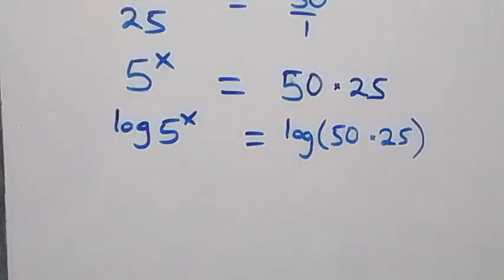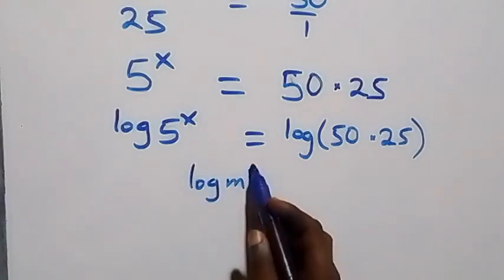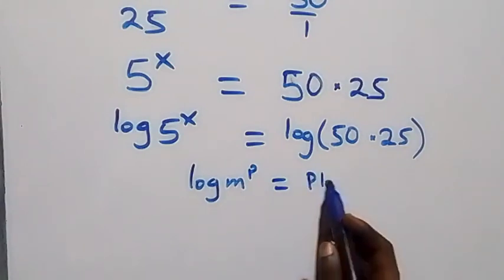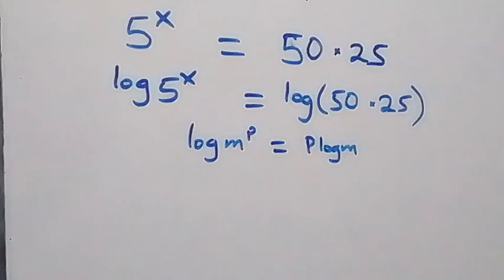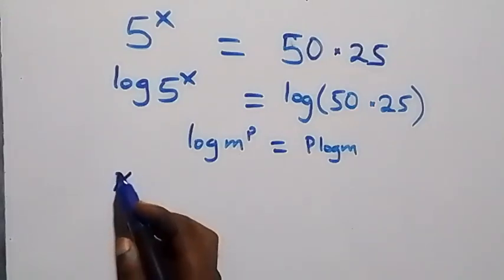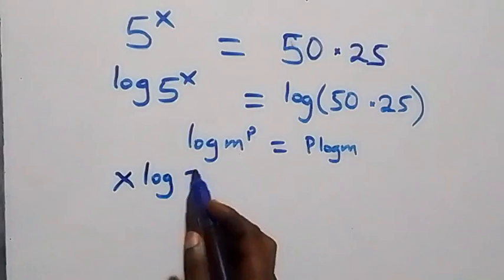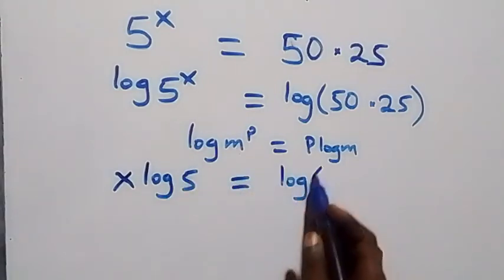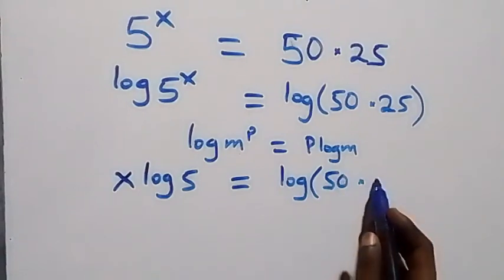The next step, we apply the power log rule. When we have log of m raised to power p, this is the same as p times log m. That is, all we have here becomes x log 5 equals to log of 50 times 25.